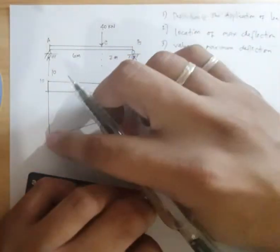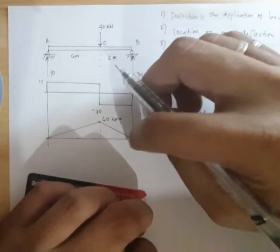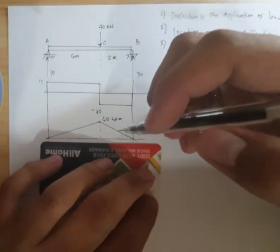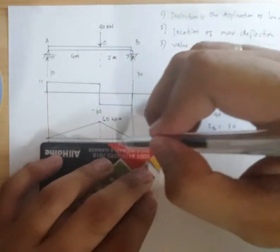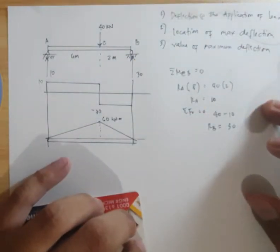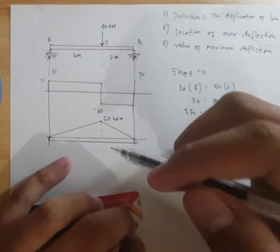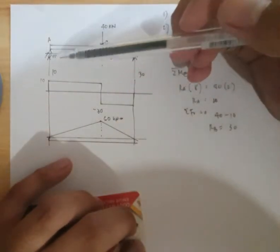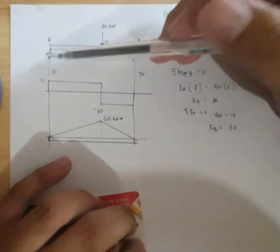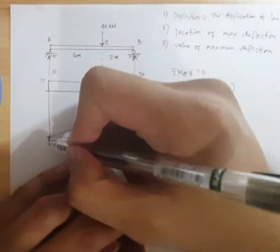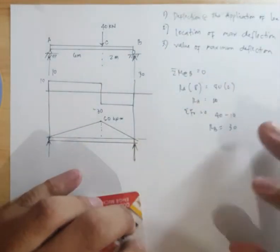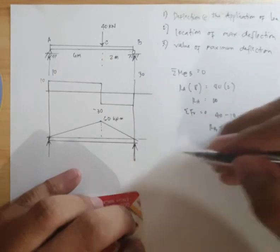So, nakuha na ang moment diagram, M over EI diagram sa real beam. Then, convert na ito to fictitious beam. Okay? Convert na ito to fictitious beam. When you convert to real beam, a simple support will remain a simple support sa fictitious beam. So, wala ang changes sa beam, no? Wala ang changes. Kuha na po niyo ang mga reaction din.